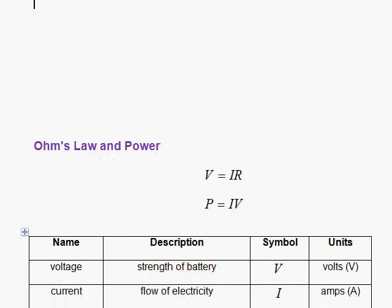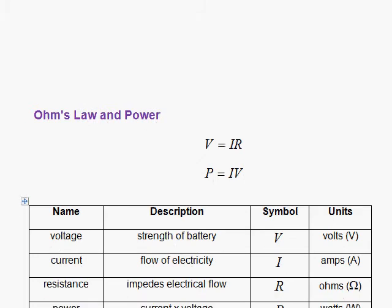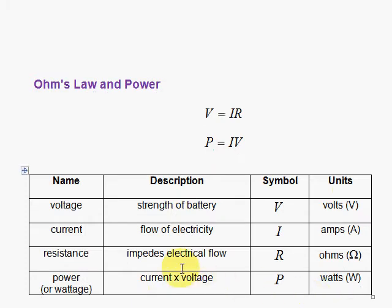And the current is the flow of electricity, I, measured in amps after Ampere, abbreviated as capital A. Resistance, which impedes electrical flow, capital R, measured in ohms, and here we have the Greek letter capital omega.